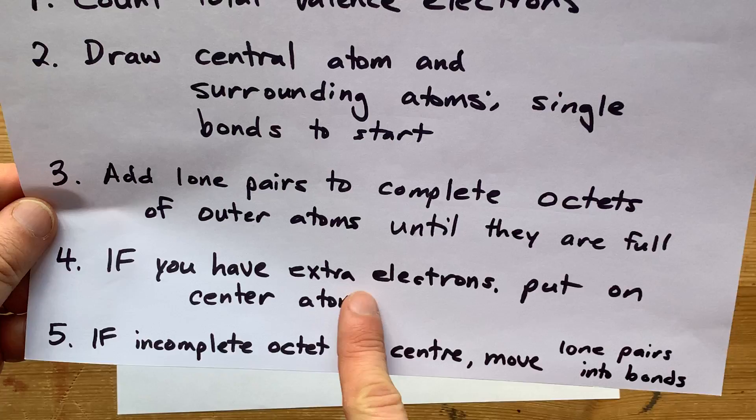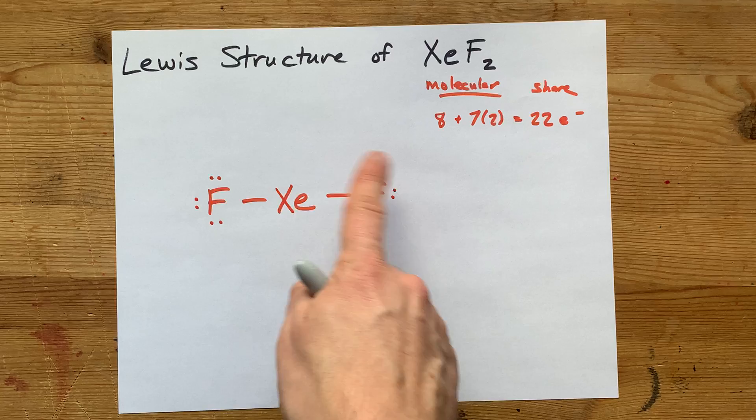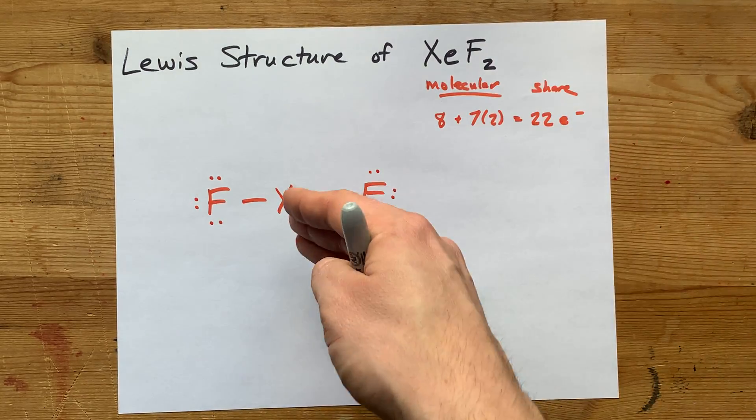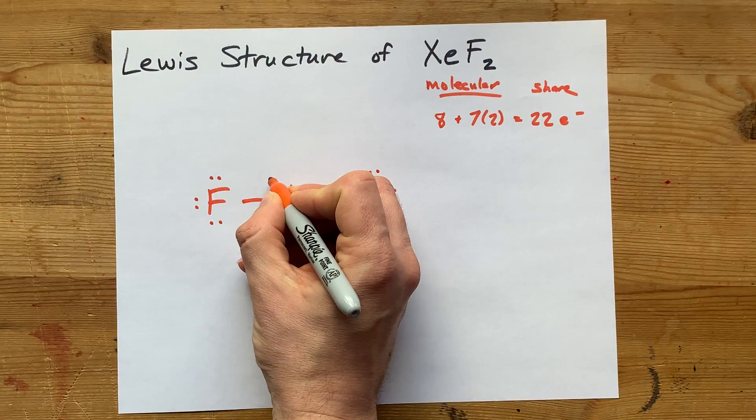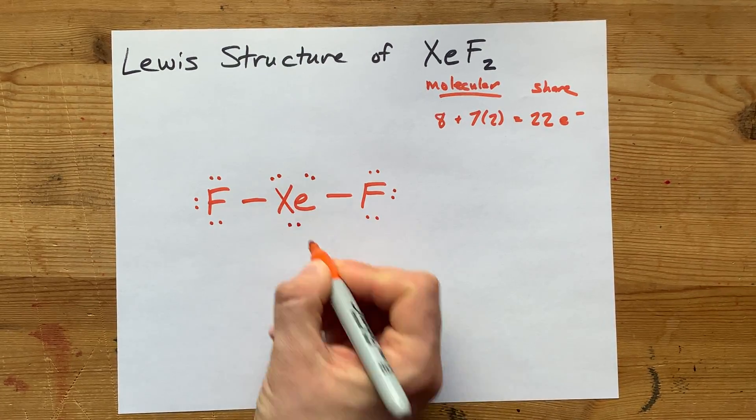If you have extra electrons, we're going to put them on the central atom. We do. I only counted up to 16 here, and I need 22. So I'm just going to dump electrons on the central atom here. That's 17, 18, 19, 20, 21, 22.